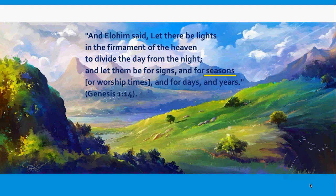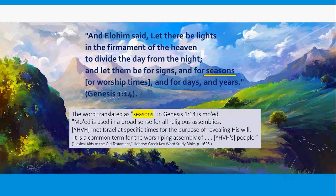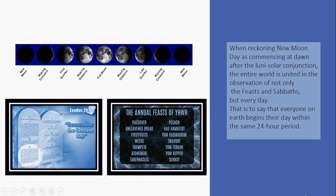Elohim said: 'Let there be lights in the firmament of the heavens to divide the day from the night, and let them be for signs and for seasons or worship times, and for days and years.' Genesis 1:14. The word translated as 'seasons' in Genesis 1:14 is mo'ed, used in a broad sense for all religious assemblies. Yehovah met Israel at specific times for the purpose of revealing his will. When reckoning new moon day as commencing at dawn after the lunar-solar conjunction, the entire world is united in the observation of the feast days and sabbaths, and everyone on earth begins their day within the same 24-hour period.